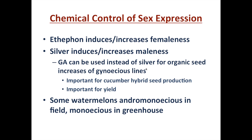For organic growers that want to do a seed increase of an all-female gynoecious line, there are some gibberellins that can be used. With these all-female lines, having all the flowers on the plant yielding fruit is important for yield and also for hybrid seed production. If you have an all-female plant next to a monoecious plant, you can very efficiently produce hybrid cucumber seed where all the seed collected off the all-female line is pollinated by the monoecious plant next to it.